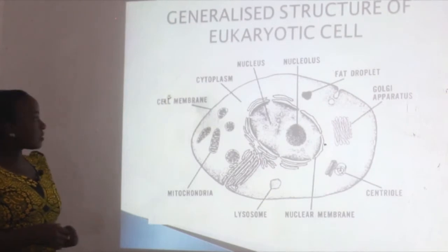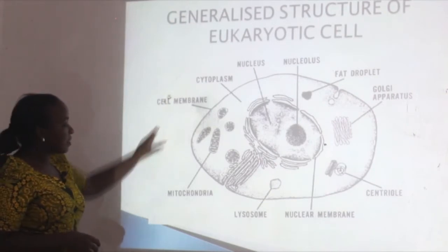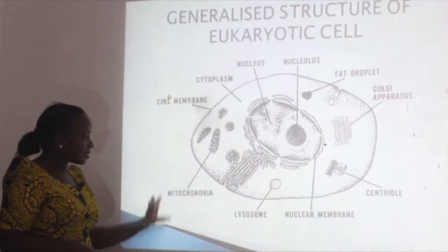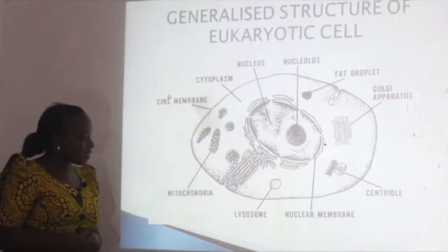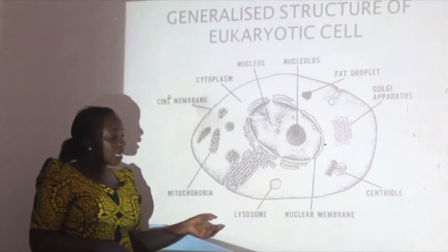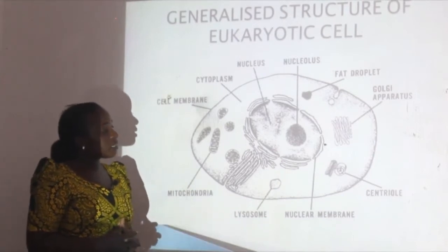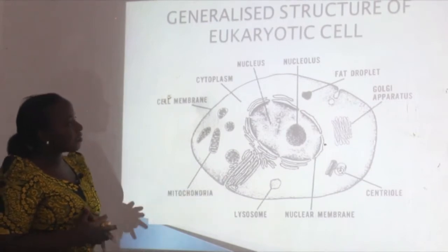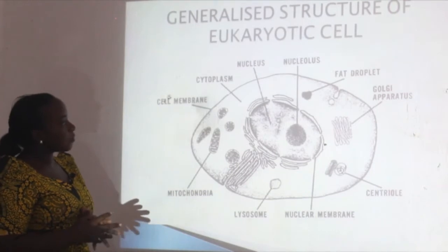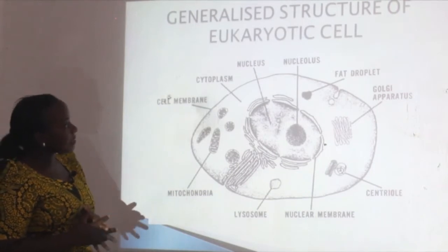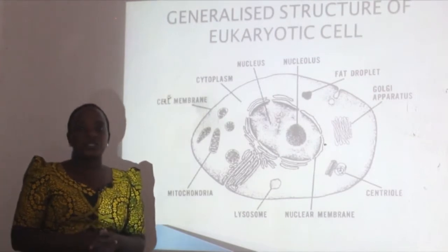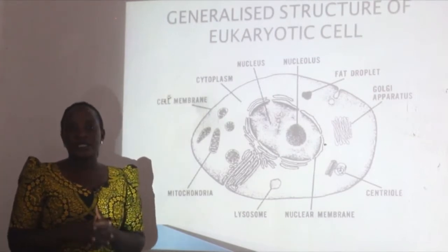The eukaryotic cell has parts such as the cell membrane, the mitochondria — which is the powerhouse of the cell and provides the cell with energy — the lysosomes, the nuclear membrane, the Golgi apparatus, the endoplasmic reticulum membranes, the nucleolus, and the nucleus. This is the general structure of a eukaryotic cell.